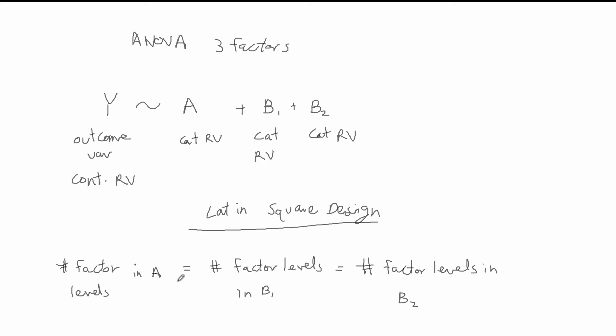For example, if A has three treatment groups then you have a 3x3 Latin square design, but it could be any number — a 4x4 or a 9x9 Latin square design. If it's 3, then variable A, b1, and b2 all have three factor levels each. If it's 9, then all three factors have nine levels each. That type of ANOVA model is called a Latin square design.